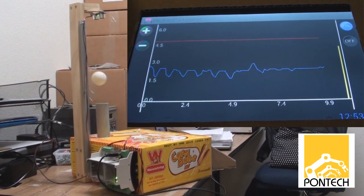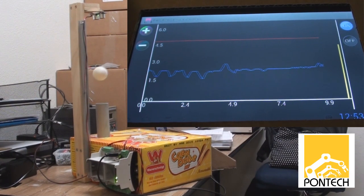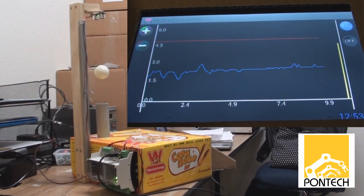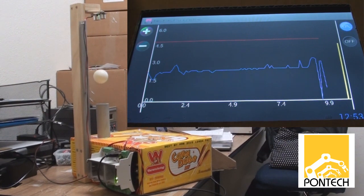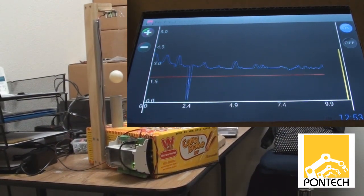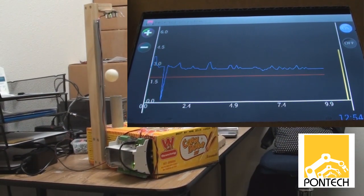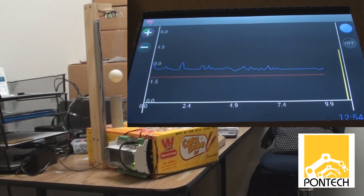The two ping pong balls shown in this video are of slightly different weights. The white ball is slightly heavier than the orange ball. Because of this, the fan speed required to keep the white ball at a particular levitating height is much higher than for the orange ball.